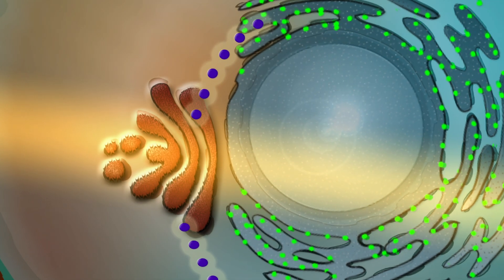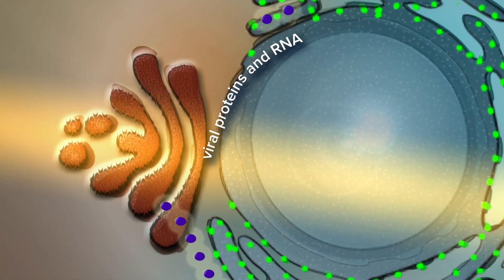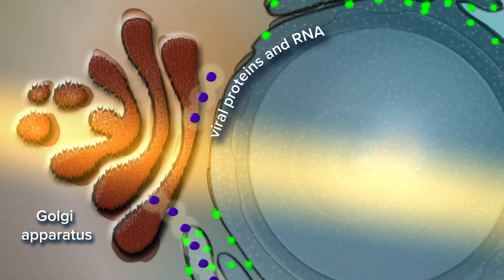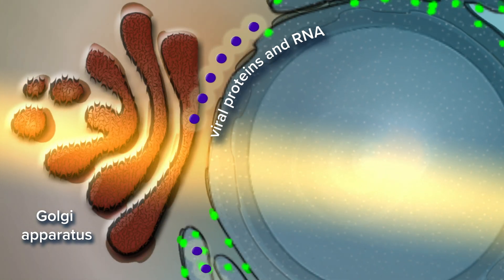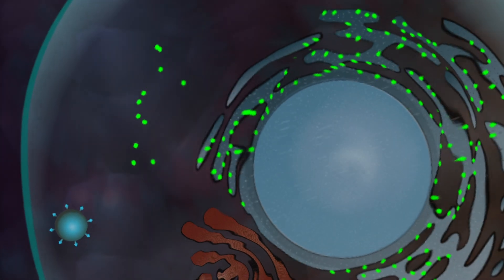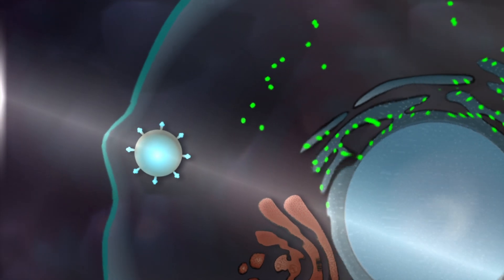Once the new viral proteins and RNA are copied, they are transported through the endoplasmic reticulum to the Golgi, where the newly minted viral proteins and RNA are packaged and then released from the infected cell where they can infect another cell, thus continuing the viral propagation.